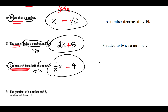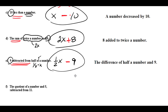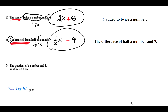Another phrase that represents the same thing is 'the difference of half a number and 9' — 'the difference of' followed by the list: half a number and 9 — giving the exact same expression. Finally, 'the quotient of a number and 5 subtracted from 11': 'the quotient of' represents division, so we write a fraction. The quotient of a number and 5 is x over 5, written as x/5.